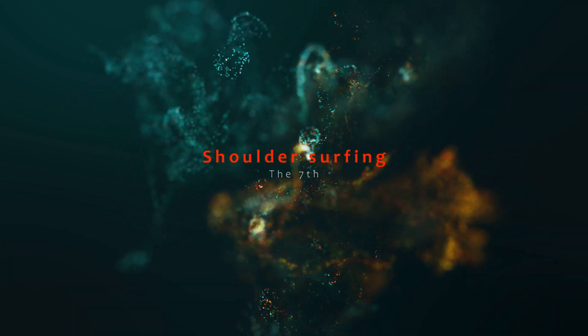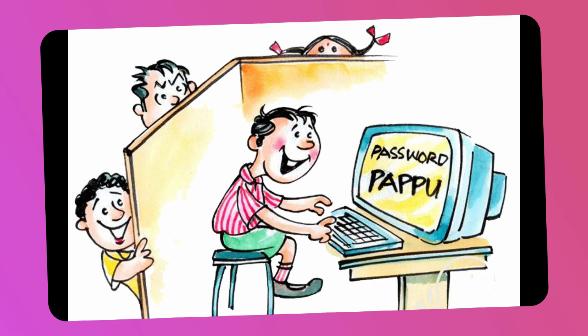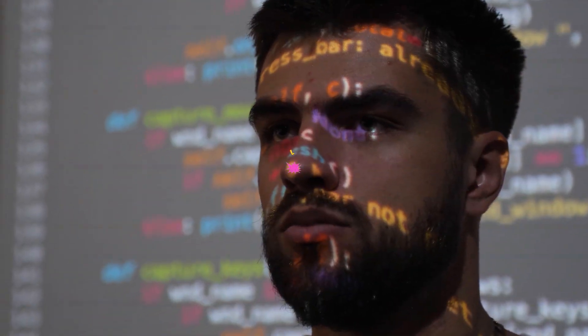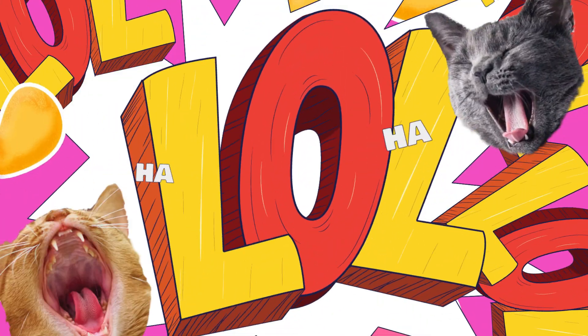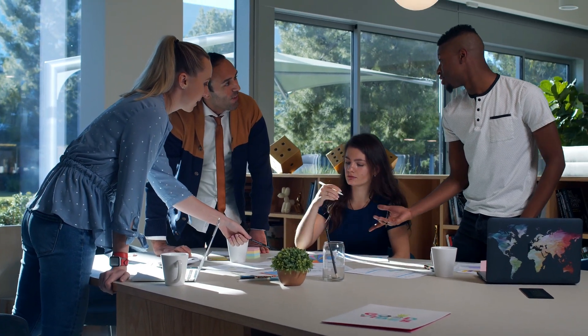The last, or seventh, is shoulder surfing. Shoulder surfing occurs when someone watches over your shoulder without your knowledge to capture valuable information such as your password, ATM PIN, or credit card number.